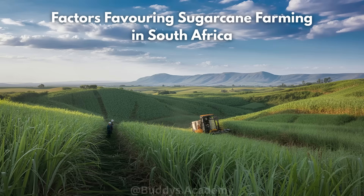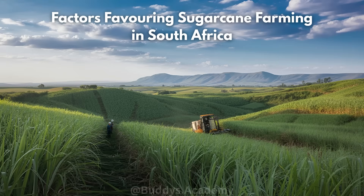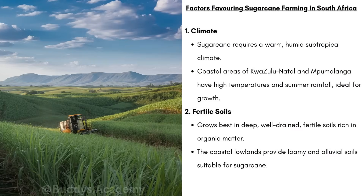Let's start with the factors that are going to favor sugarcane farming in South Africa — basically, the things that help sugarcane grow well. Firstly, we have climate. Sugarcane requires a warm, humid, subtropical climate because it grows best in hot temperatures, especially in areas with a lot of moisture in the air. Coastal areas of KwaZulu-Natal and Mpumalanga have high temperatures and summer rainfall, ideal for growth. These areas get plenty of rain in summer and warm temperatures all year round.